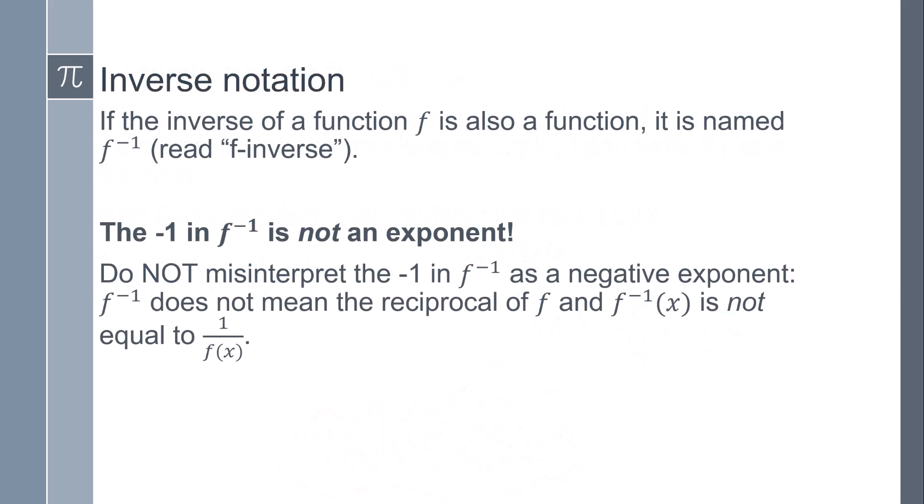Now this f to the negative 1, we don't read that as f to the negative 1. I know it looks like that. I'm using that language because that's what we're thinking. It's f inverse. That's how we say it. Do not misinterpret that negative 1. It's not a negative exponent. It doesn't mean we have to flip it. The way we would say this is f inverse of x.